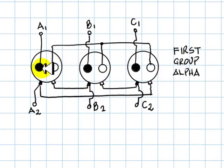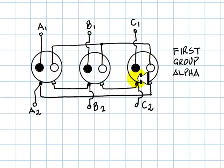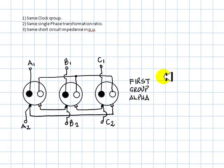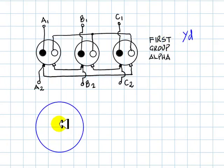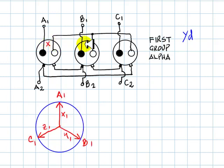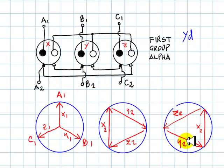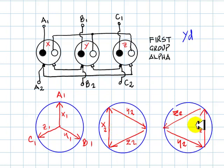Group Alpha has primaries connected in a Y and secondaries connected in a delta — a Y-delta connection. For the primary in a Y, the standard connection allows us to label the transformers as X, Y, and Z. The secondary voltages are in phase with those, but connected in a delta. Only two possibilities exist for the delta of the secondary, given the phases imposed on those three coils by the primary voltages.